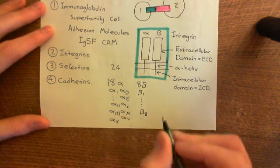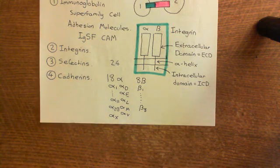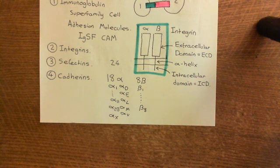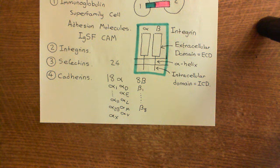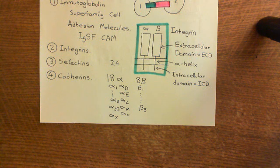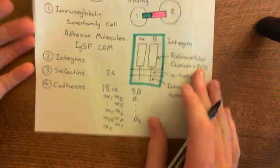We're now going to look at some specific examples of integrins and their function in the body. We'll start with two that are important in immunology: LFA-1, which stands for lymphocyte function-associated antigen 1, and VLA-4, which stands for very late antigen 4.